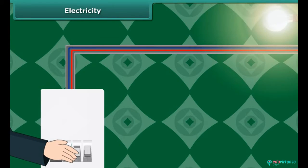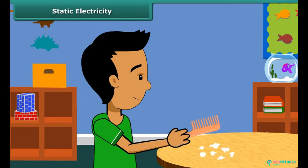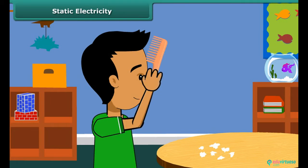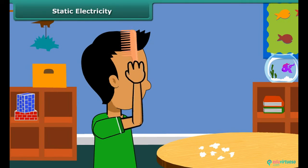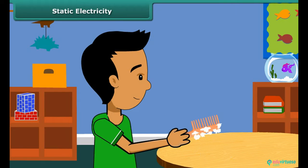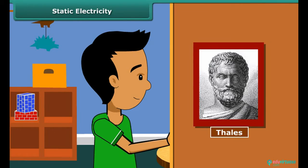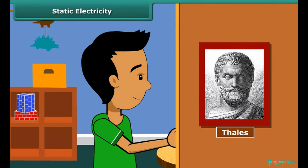When we comb our hair with a plastic comb and take it near small pieces of paper, the paper pieces are attracted toward the comb. We then say that the comb is charged with electricity. This was first noticed by a Greek man named Thales over 2,500 years ago.